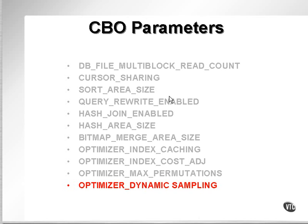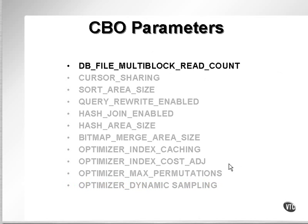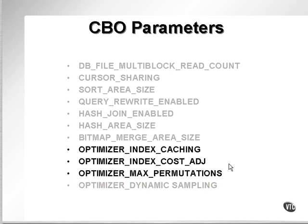There is one thing that you may have noticed. This particular parameter, optimizer index cost adjust — I said that it discourages index use and can encourage full table scans, which is effectively the same thing as the db file multi-block read count. Don't get confused between the two. They are slightly different, but they are almost the same.